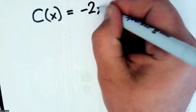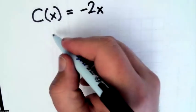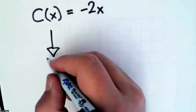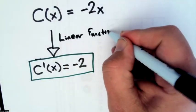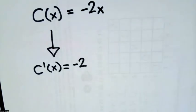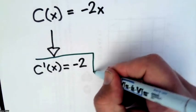C of x is equal to negative 2 times x. We could just do this directly by knowing how these kinds of functions look in terms of derivative. So we have the linear function rule. We know that the derivative of a linear function is always the same as the slope.